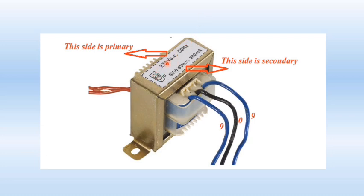Sometimes the rating is already mentioned on the transformer. For example, if '230V AC 50Hz' is written on one side, that side is your primary. If '9V-0-9V AC' is written on the other side, that is your secondary. This is again a center-tap transformer, as the 9-0-9 volt rating indicates.